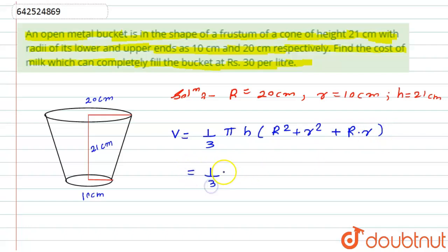Now if I will look at the figure here, pi value will be 22 by 7 into height is given to us 21 centimeter. Capital R is 20 centimeter that square, small r is 10 centimeter that is square, plus 20 into 10. Now if I will cut it down, so 7 threes are 21.